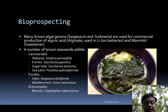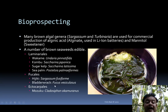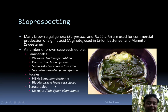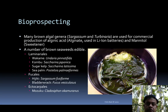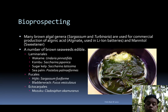Coming to Fucales, the two most important edible algae are Hijiki, which is Sargassum fusiforme, and bladderwrack, which is an edible alga especially in Scandinavian countries as well as in the UK, particularly Scotland. Bladderwrack is Fucus vesiculosus. Ectocarpales also has one very famous member called Mozuku. Mozuku is Cladosiphon okamuranus, basically cultivated in Okinawa, the southernmost tropical island of Japan, where a very large American military base is located. Mozuku belongs to Ectocarpales.